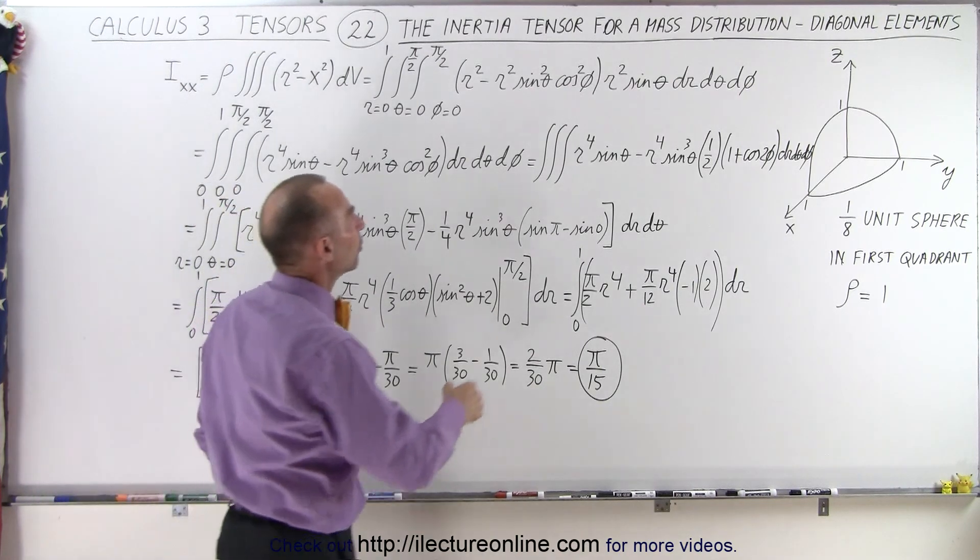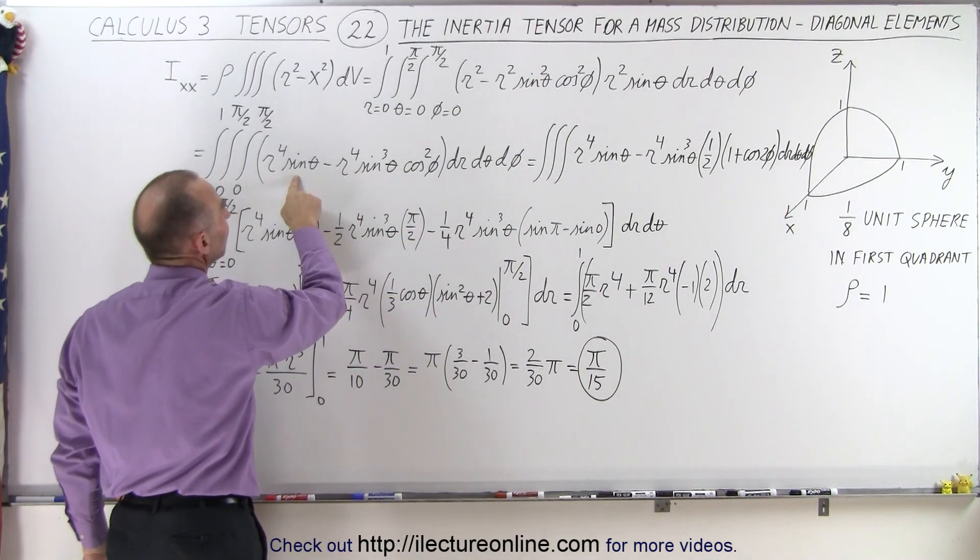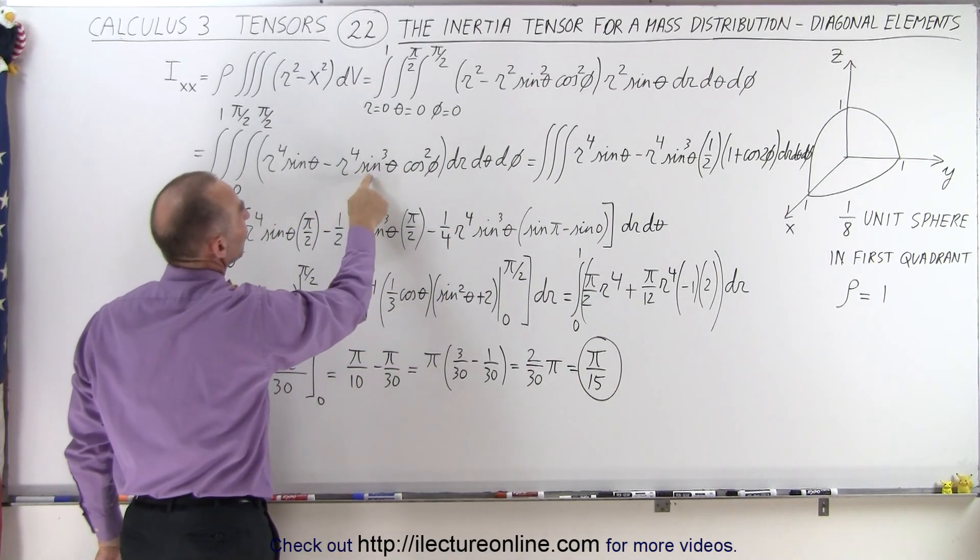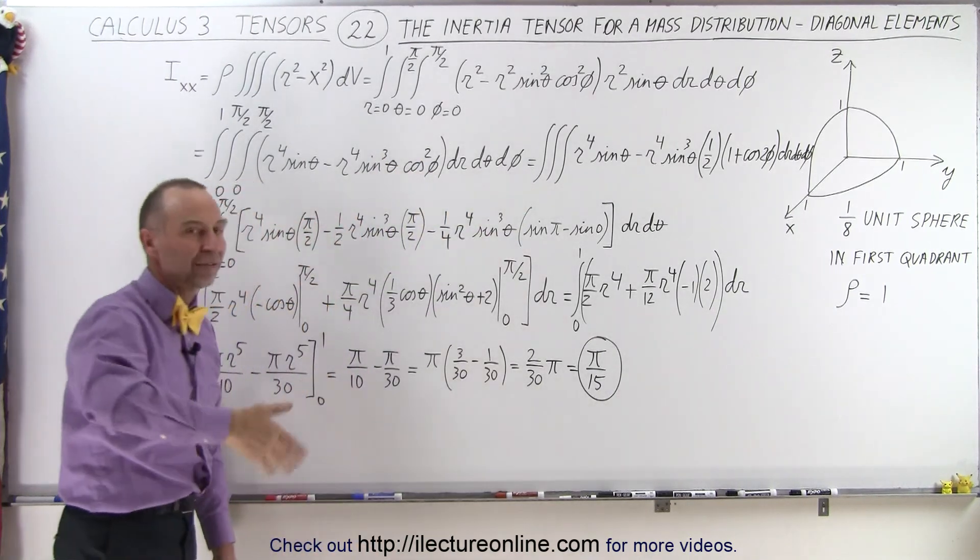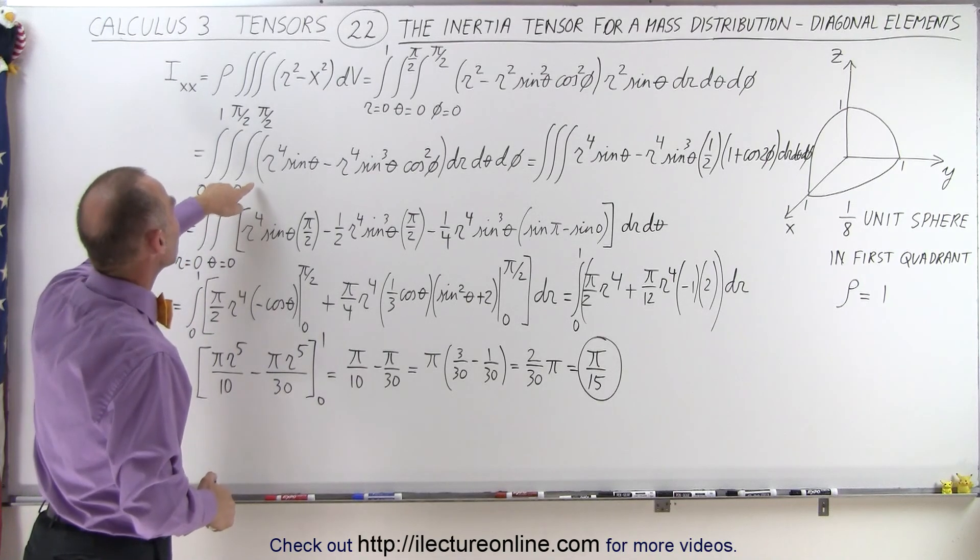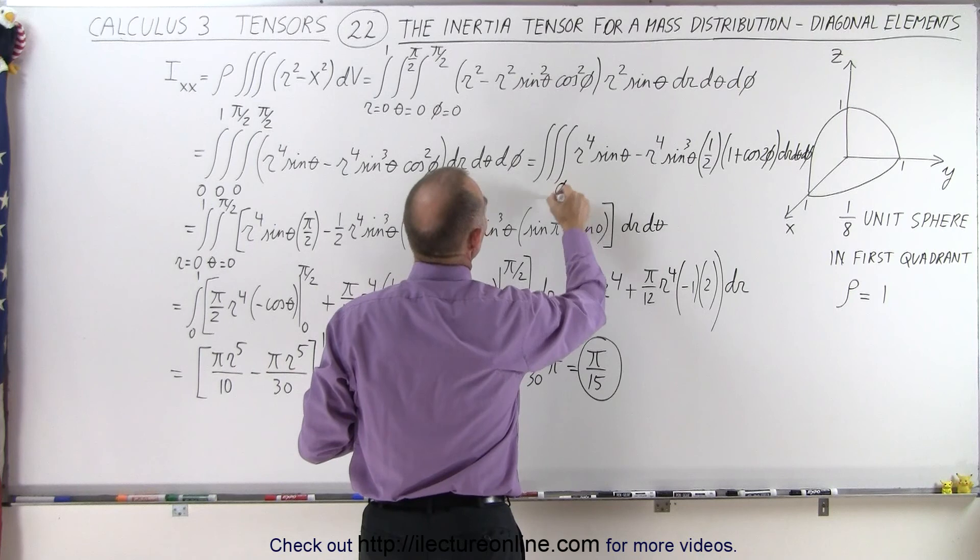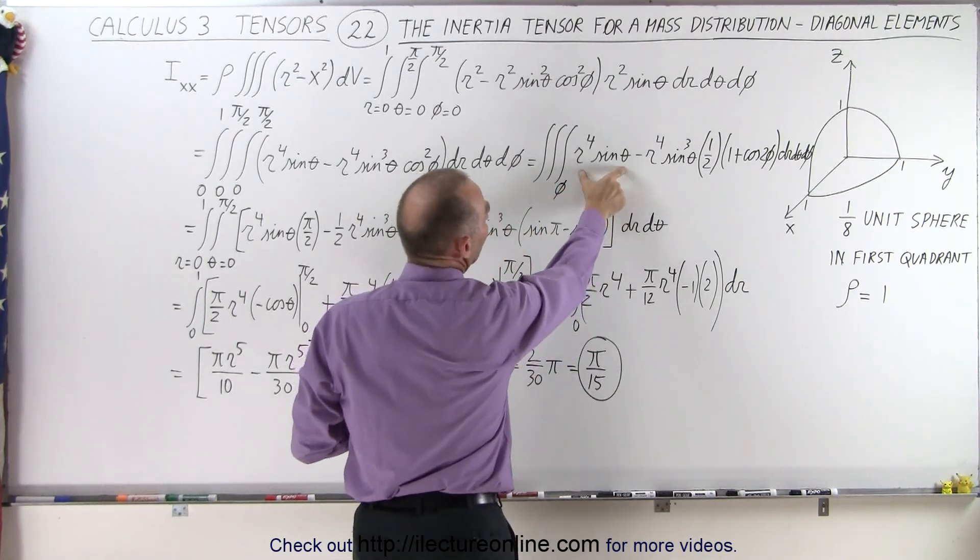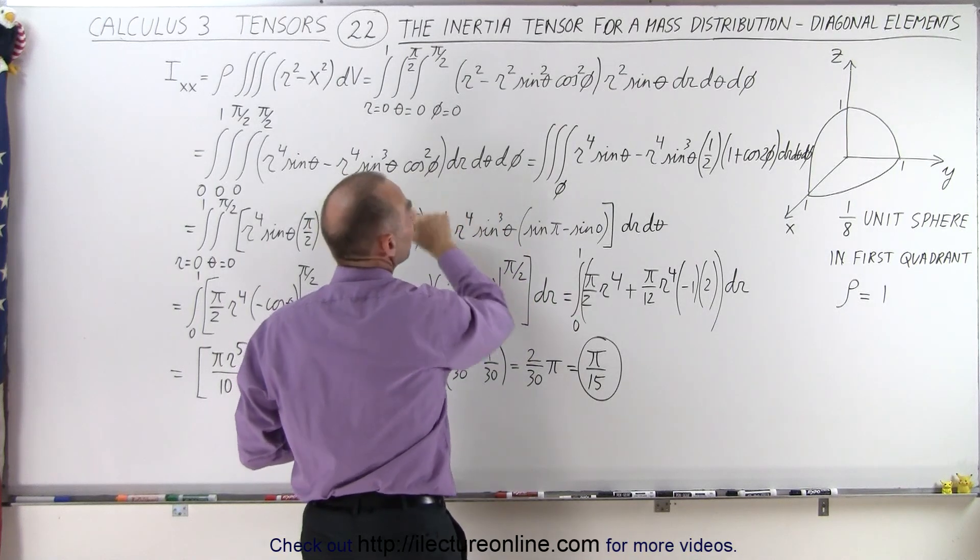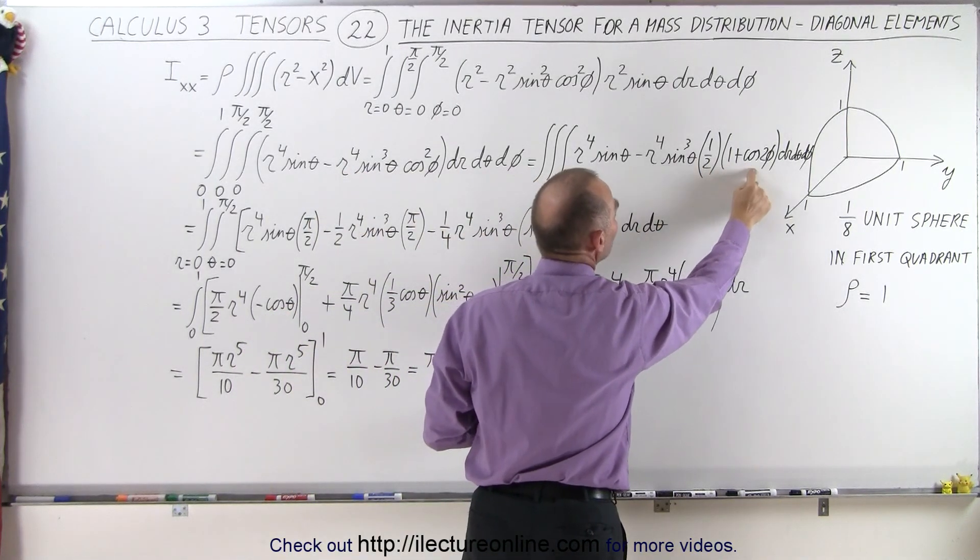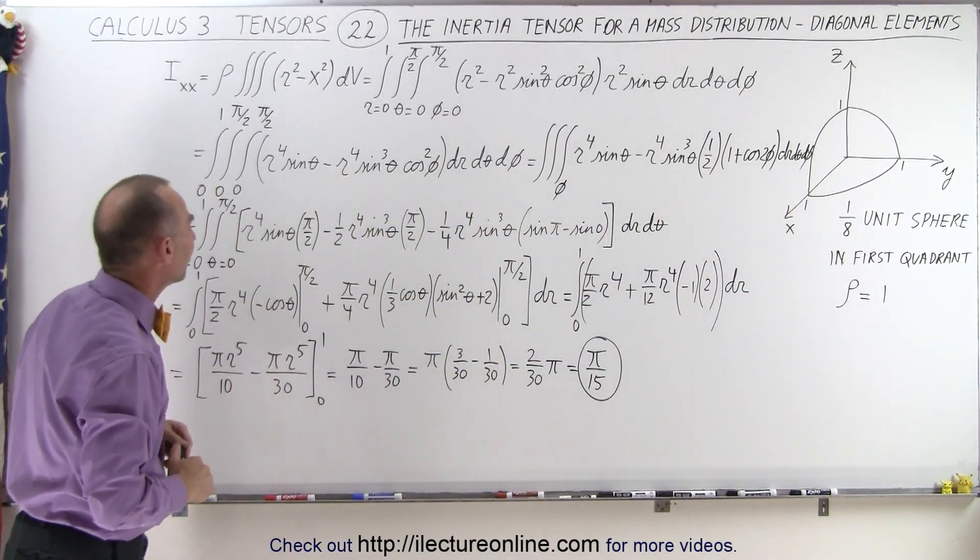Now the first thing we want to do is multiply this times this, so we end up with r to the fourth sine of theta minus r to the fourth sine cube of theta cosine square of phi, and then dr d-theta d-phi. So we'll have to make three integrals. We'll first start with the integral over phi, so we're going to integrate over phi first. When we do that, notice we don't have any phi's in here, and the cosine squared of phi can be written as one-half times 1 plus the cosine of 2 phi. That makes it easier.